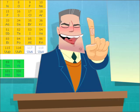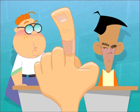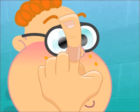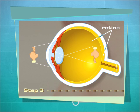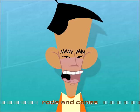However, when you look at objects that are up close, the lens has to adjust to the scattered light rays. The ciliary body contracts, which forces the lens to become rounded in order to focus on the retina.